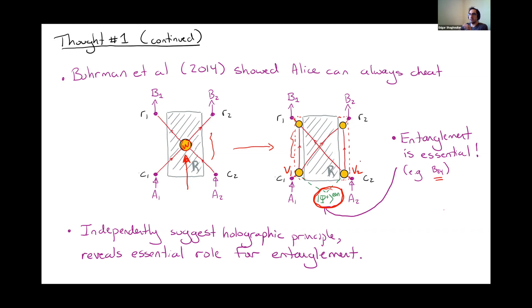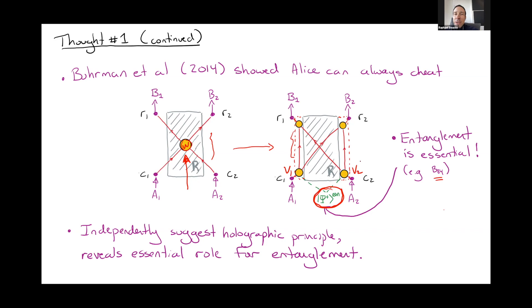A follow-up: so you believe it even in quantum field theory, without something specific about gravity or black holes? Yes. A comment: holography is supposed to become trivial when G_Newton goes to zero. But perhaps it's gravity that's supplying the entanglement resource — when gravity is turned on you're guaranteed to have it. That's an interesting and plausible statement worth mulling over.